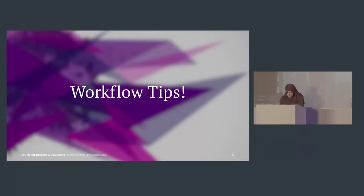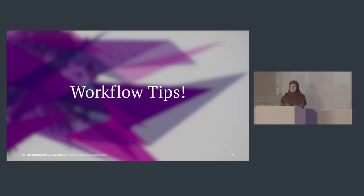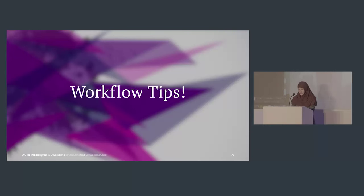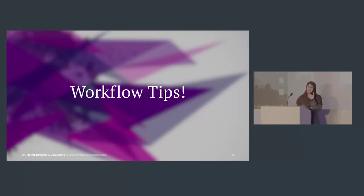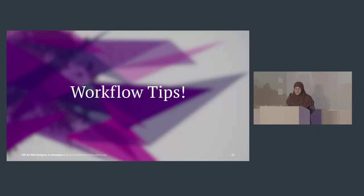A couple of workflow tips. In Illustrator, if you want to change just one element without re-exporting the entire SVG, select the layer or element you've changed, Command+C to copy, and paste directly into your code editor. You can copy-paste directly from Illustrator into a code editor. Also, Brackets has a plugin called SVG Preview — you can click any element in the SVG code and it gets highlighted visually, giving you instant visual feedback.